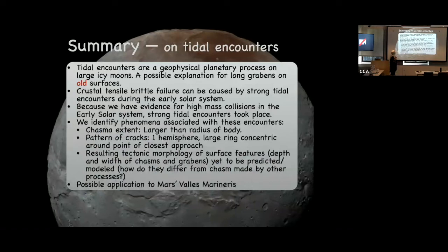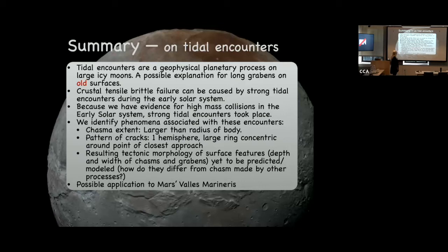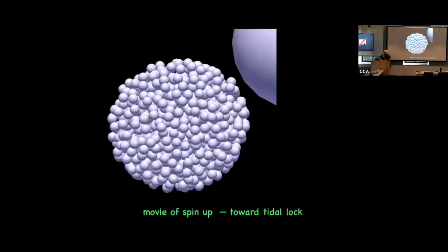We proposed a new geophysical mechanism for moons — that tidal encounters are a process that happens in space — as a possible explanation for the big rifts seen in objects like Dione and Charon. We know that really strong collisions happened in the early solar system, and we argued that these near-miss tidal encounters had to take place, with the manifestation being these big cracks. We made some predictions for what the cracks would look like, and also proposed this as a possible explanation for Valles Marineris, though the alternative explanations have a lot of detailed support.